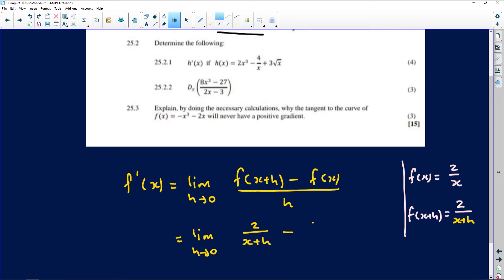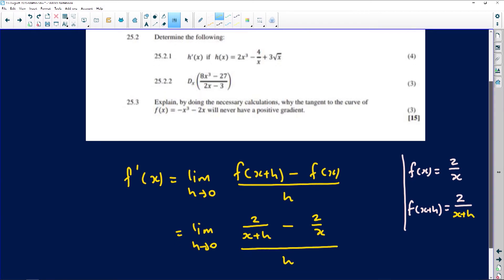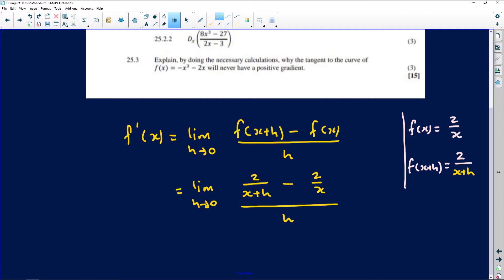There's a minus, f of x is simply 2 over x and everything is just divided by h. That's just the correct substitution that we're ending up with here.